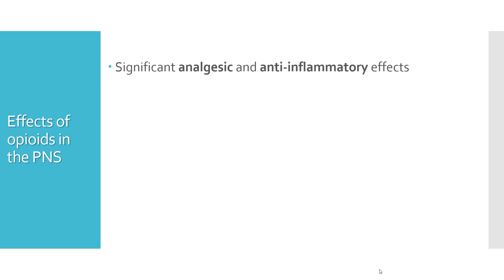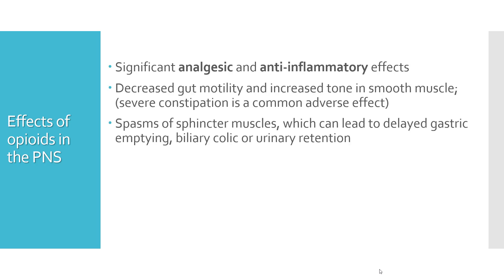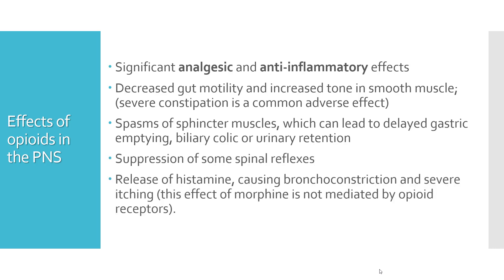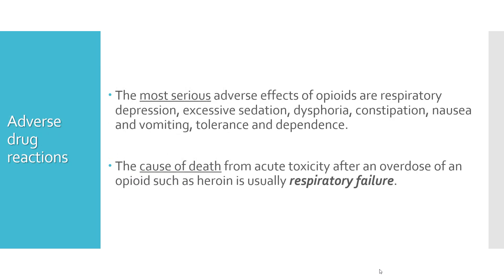In the peripheral nervous system, analgesia and anti-inflammatory effects are seen. Decreased gut motility and increased smooth muscle tone can lead to constipation, delayed gastric emptying, biliary colic, or urinary retention. Suppression of some spinal reflexes and release of histamine can cause bronchoconstriction and severe itching. The most serious adverse drug reactions are respiratory depression, excessive sedation, dysphoria, constipation, nausea and vomiting, and tolerance and dependence. The cause of death from acute toxicity after opioid overdose such as heroin is usually respiratory failure — a central nervous system effect.